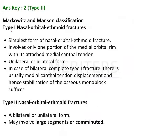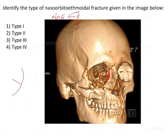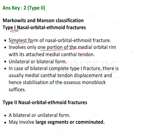They classified Type 1 as the simplest form — a very simple fracture involving only one portion of the medial orbital rim. Only one fracture line would be seen involving only one part of the medial orbital rim.